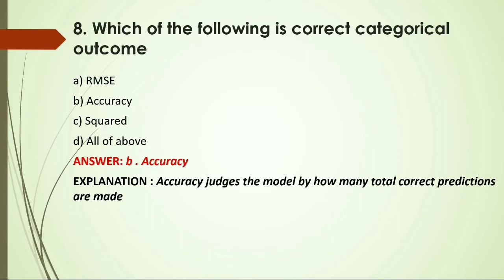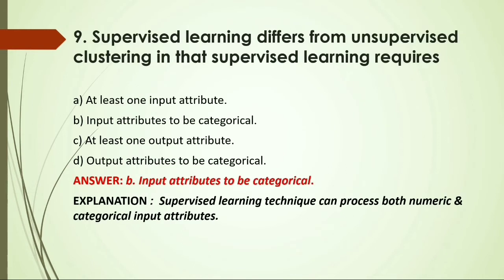MCQ: Supervised learning differs from unsupervised clustering in that unsupervised learning requires — A) At least one input attribute; B) Input attributes to be categorical; C) At least one output attribute; D) Output attributes to be categorical. Answer: B, input attributes to be categorical, because supervised learning techniques can process both numeric and categorical input attributes.